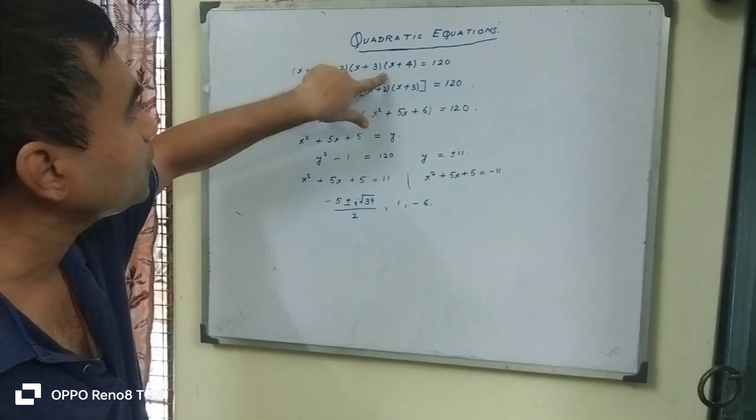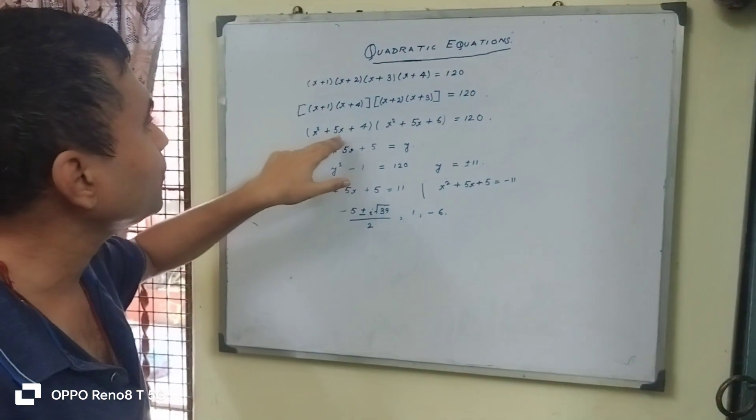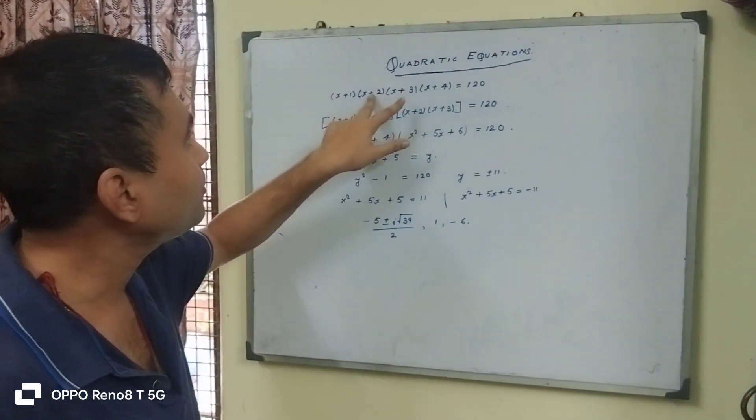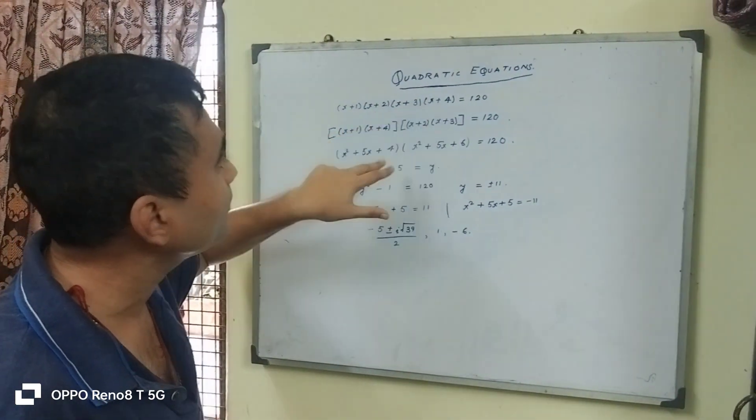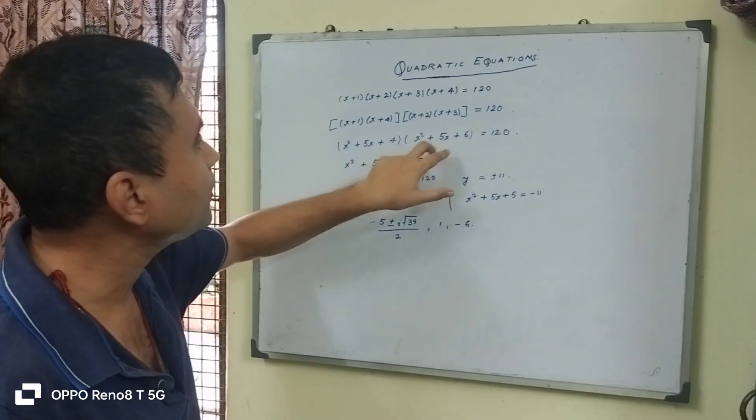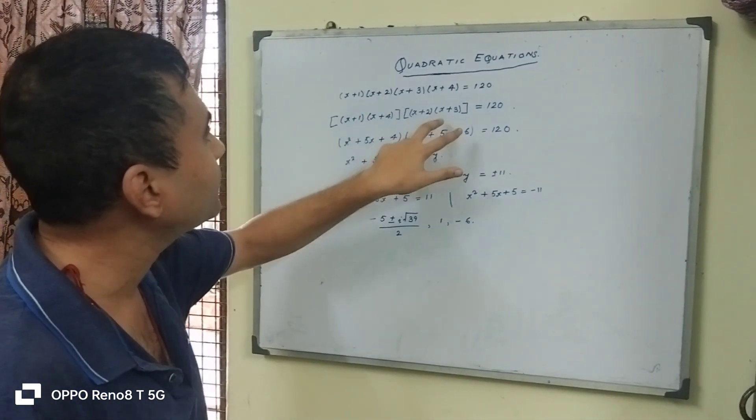x plus 1 into x plus 4 will give x square plus 5x. x plus 2 into x plus 3 will give us similar term x square plus 5x. So we club them together.